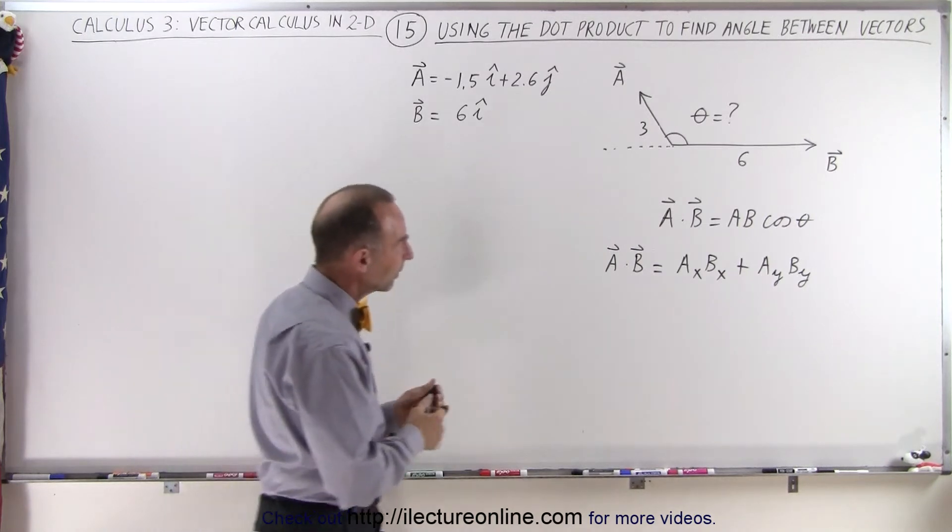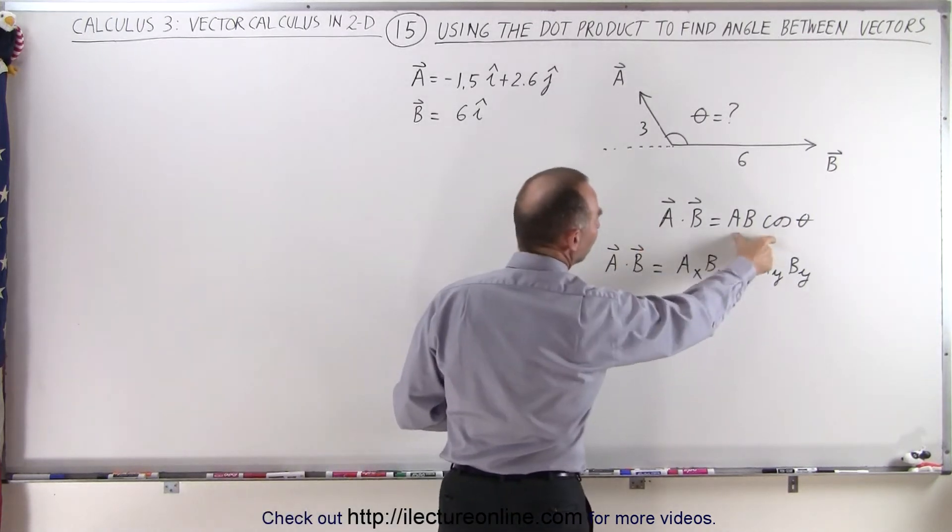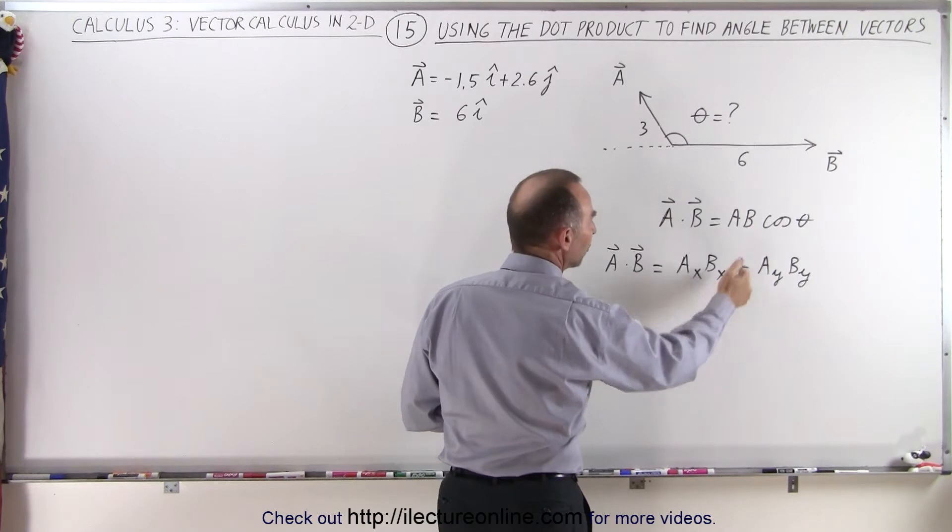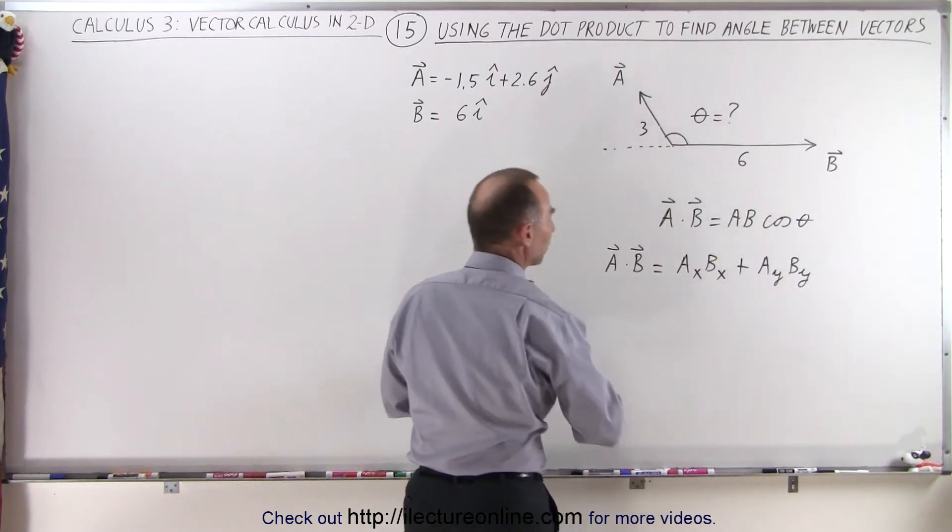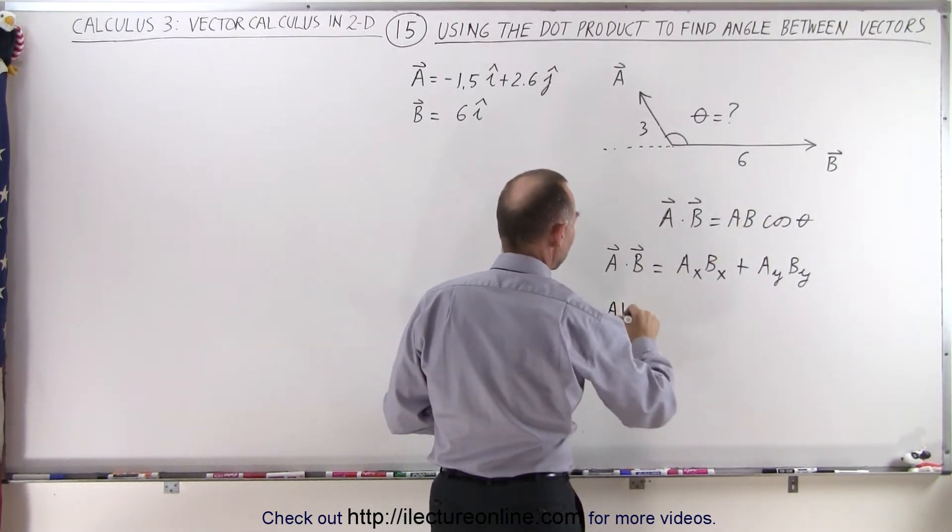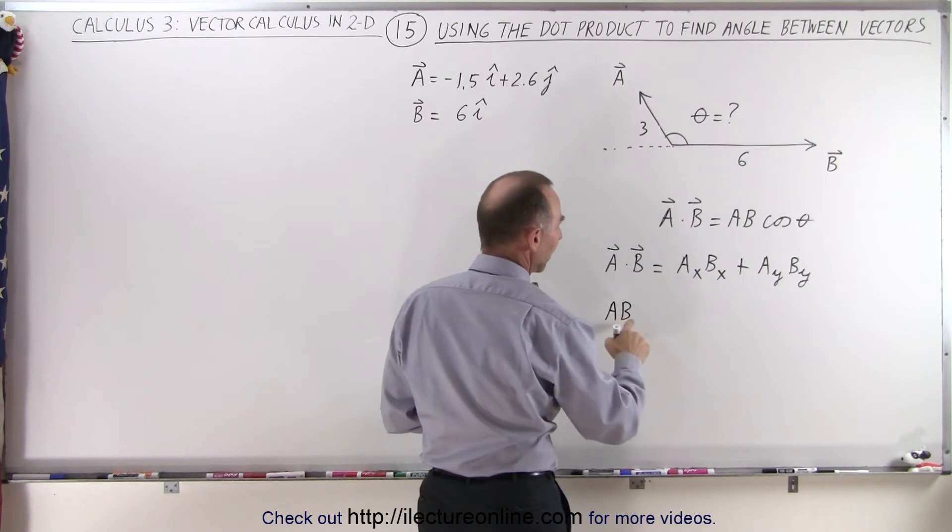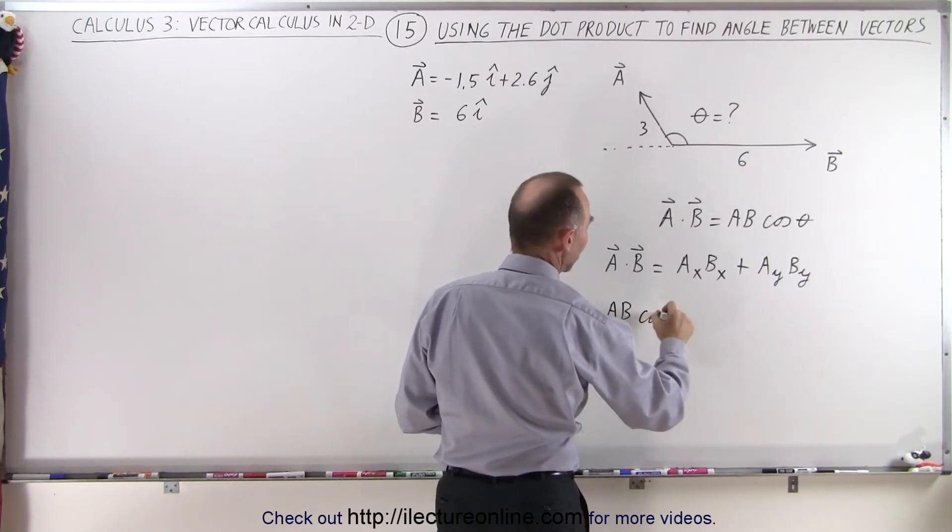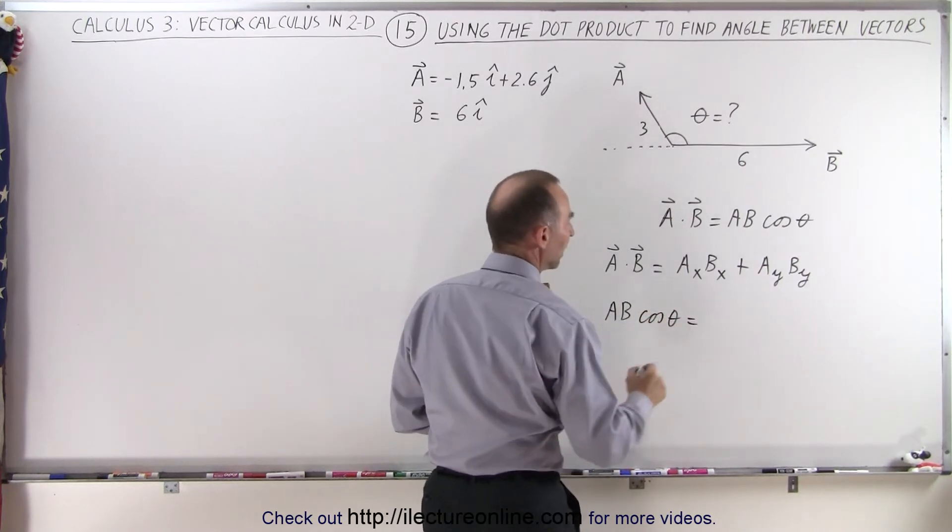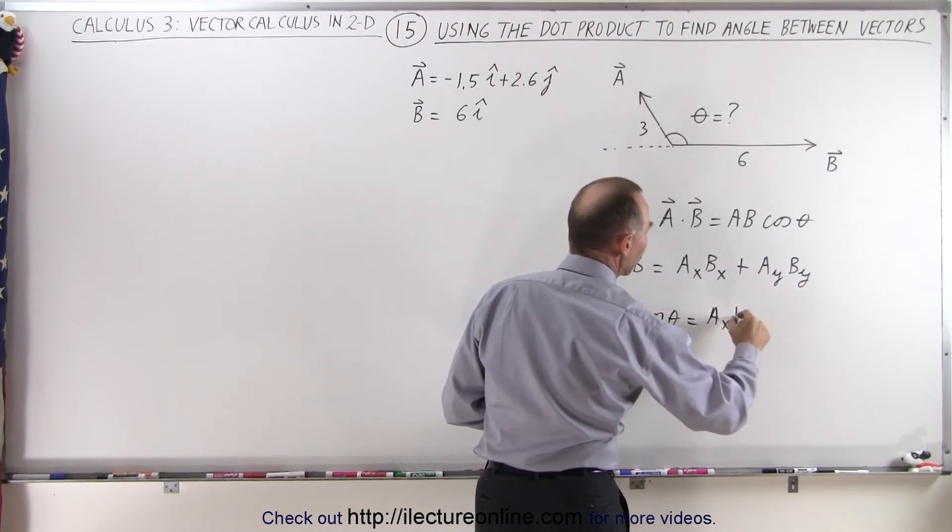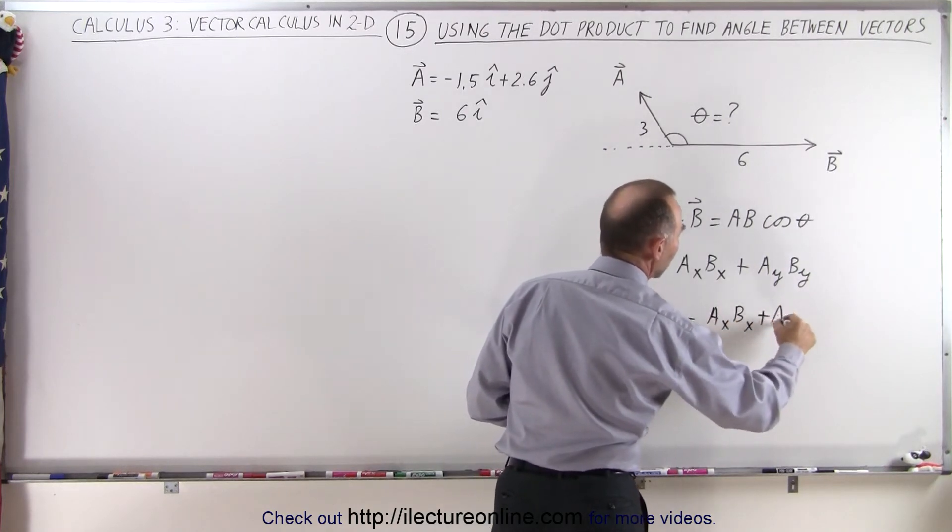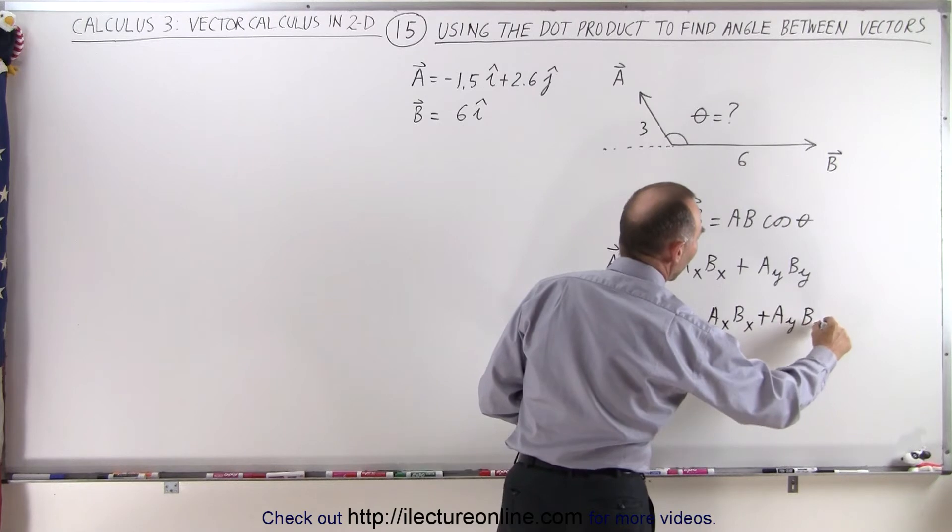But now notice that since A dot B is equal to this, and A dot B is equal to this, we can actually set those equal to one another. We can say that A times B, the magnitude of A times the magnitude of B times the cosine of the angle between them is equal to A_x B_x plus A_y B_y.